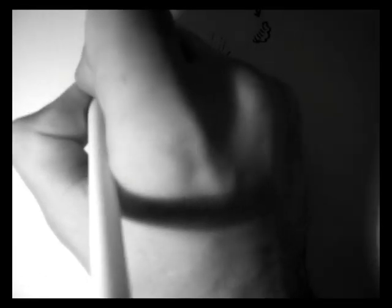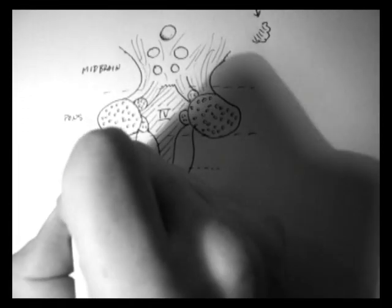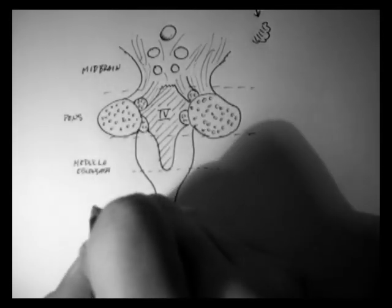So here we have the midbrain, the pons, and the medulla oblongata. And below that we have the spinal cord.